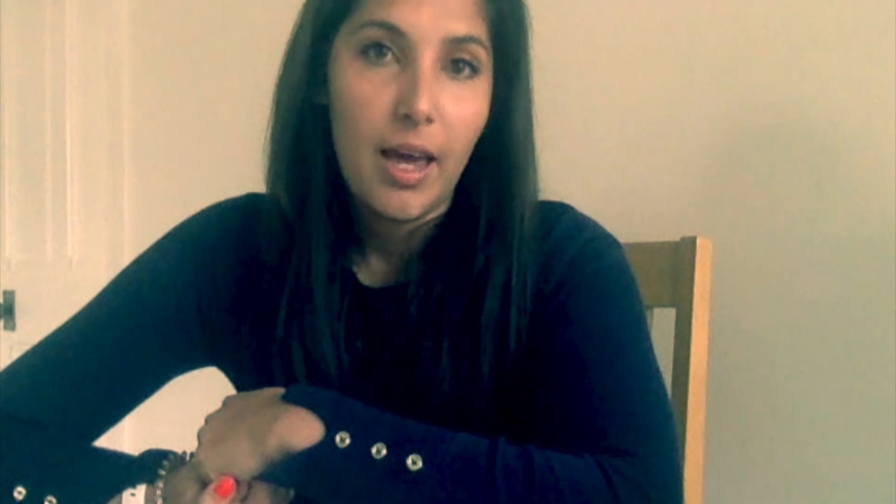So addition and subtraction. The way we're going to think about this is we're going to imagine that each of our surds is just like x. So if we added x with x we would get 2x. In the same way, if we have root a plus root a, that would be 2 times root a. However, if we have root a plus root b, we can't simplify that, in the same way that if we had x plus y we wouldn't be able to simplify.